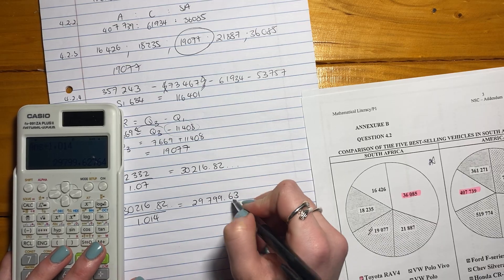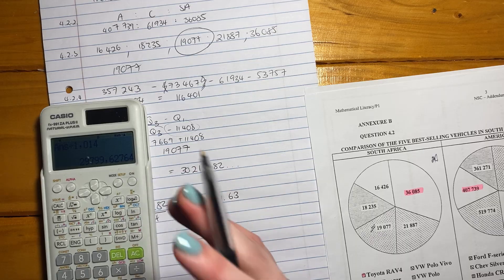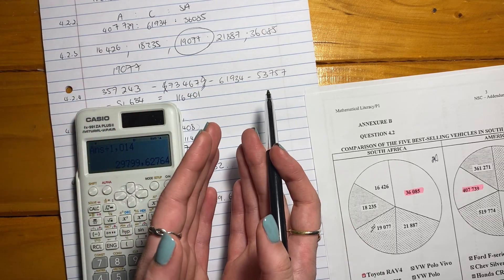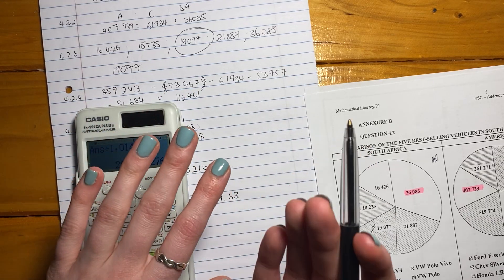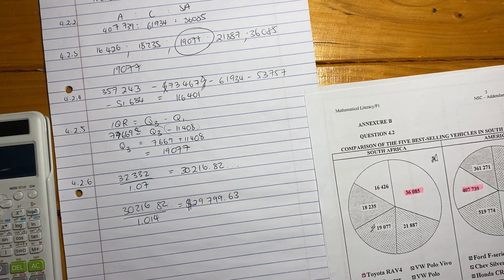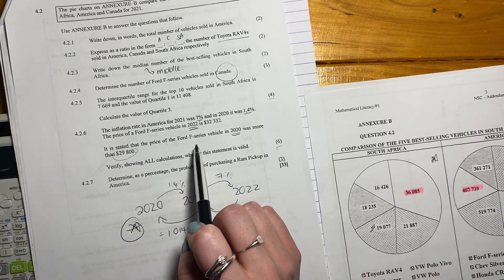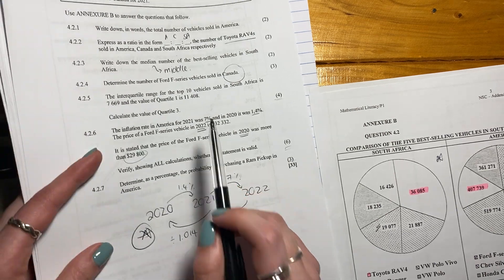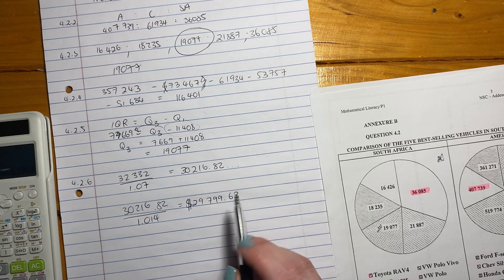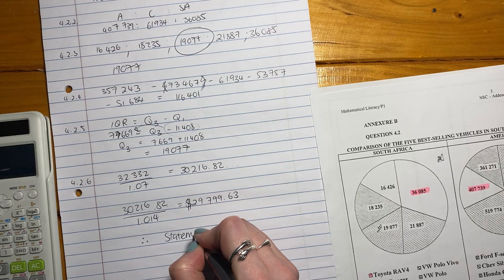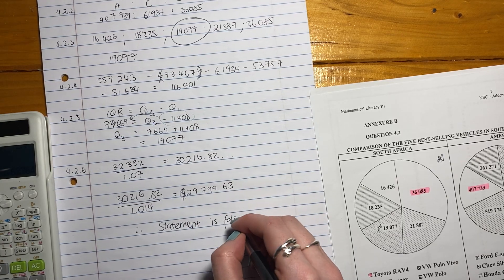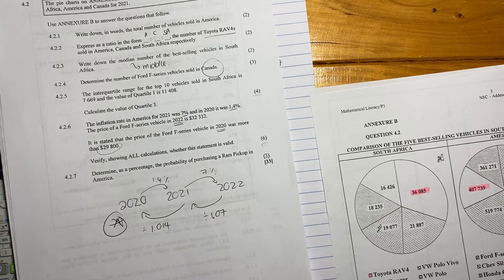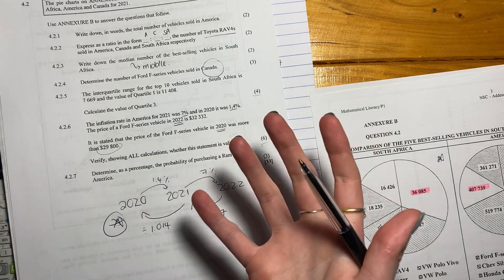Then we're going to say this answer, 30,216.82, divided by 1.014. Be careful you type it in correctly. And the answer there is 29,799.63. Why did I make it 63? Well, remember, with currency, you always only have two decimal places. Here it says 627. When you run two decimal places, we go to the third decimal place. We see whether it's greater than 5, 5 or greater, and then we round up. If it's less than that, we round down. It is stated that the price of the Ford F-Series vehicle in 2020 was more than $29,800. Well, our calculations, that's not true. It's actually less. So we say, therefore, statement is false. So be careful to actually answer the question. Students do all the calculations, fabulous, but then they don't actually answer the final statement. Even if you don't know what's going on, take a guess.